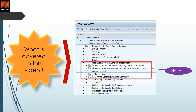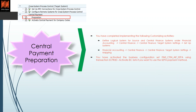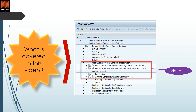I will also talk about the new functionality called cross system process control, which was only introduced in the 1909 release for central finance. An important point to consider is that in CFIN the activation happens, but at the same time there are a lot of other configurations which happen in the source system. In a future video I will be releasing source system settings.